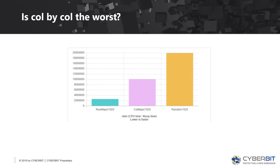Why is random access slower? The answer is prefetching. The CPU sees that I took a byte, jumped X bytes forward, took another byte, jumped the same X bytes again — so it predicts the next location and prefetches the memory. This is the CPU, not the compiler. For random access it can't predict, so it just prefetches the memory for us when the pattern is regular.